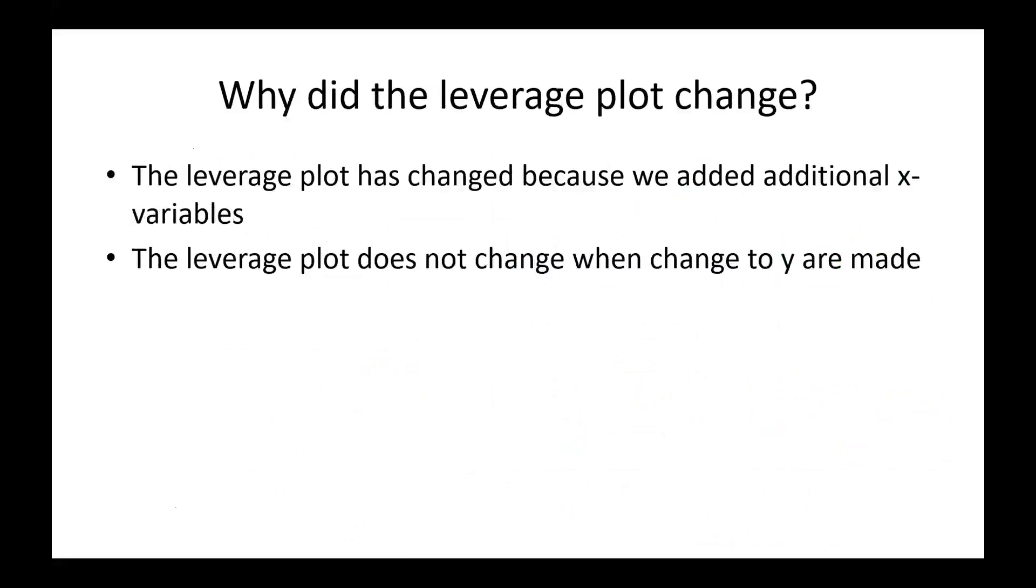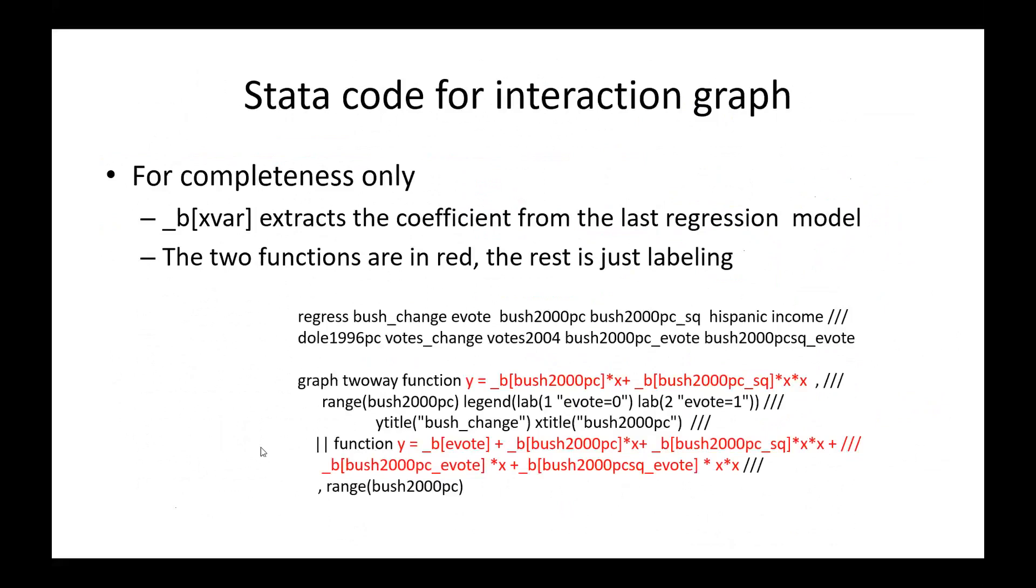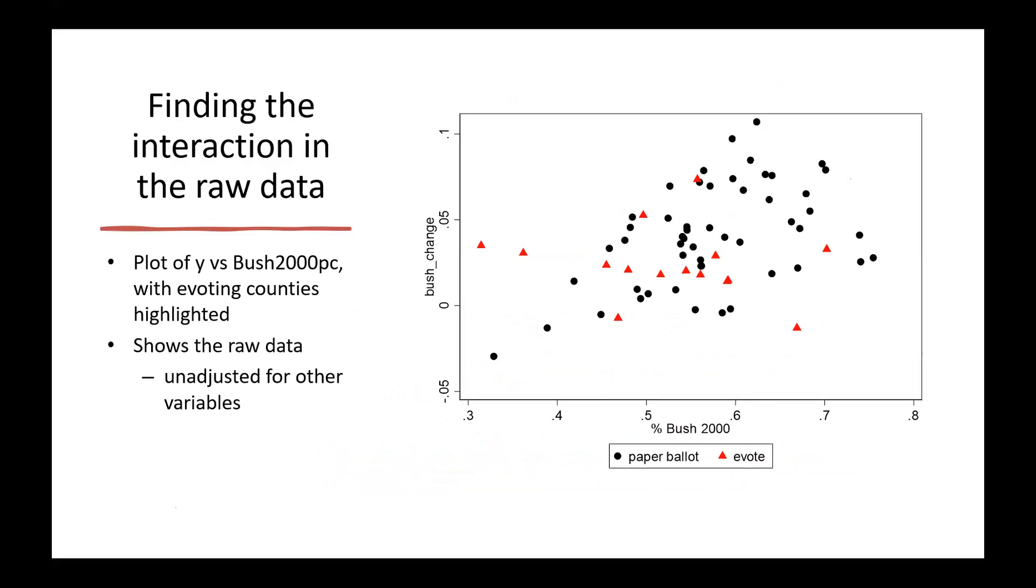Going back to that graph, here is the code. And even if you don't use Stata, I'm just going to briefly talk about what I did here. Here, I have the model with e-vote equals zero, and I'm ignoring all the other variables. So the only thing that I'm plotting is Bush 2000 and Bush 2000 squared. The underscore b is the coefficient for that variable. And here, I am setting e-vote equals one, which means I get the coefficient for e-vote as an indicator, and in addition I get these two interactions here.